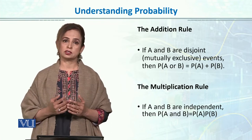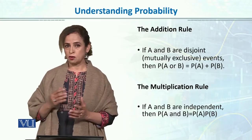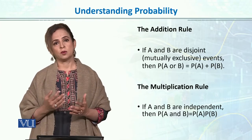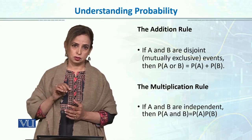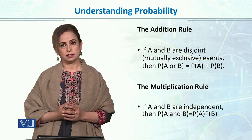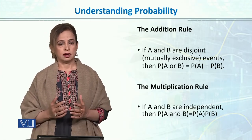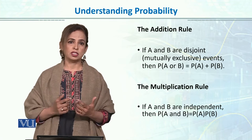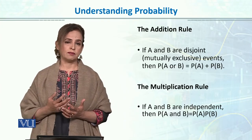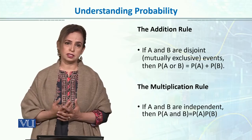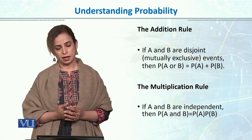If events are not mutually exclusive and we still want event A or event B, we take separate probabilities and subtract their joint probability. Then we have the multiplication law: if our events are independent and we want event A and event B, we take the product of their separate probabilities — meaning we multiply them together.